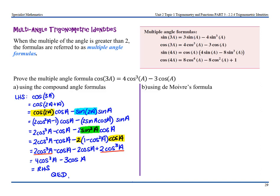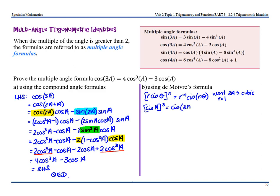Personally, I think that's the easiest option. But when it talks about using the binomial theorem, that means using De Moivre's theorem. From the formula sheet, r·cis(θ) to the power of n equals rⁿ·cis(nθ). We want 3a, so we're looking at a cubic. With r = 1, cis(a) cubed equals cis(3a).